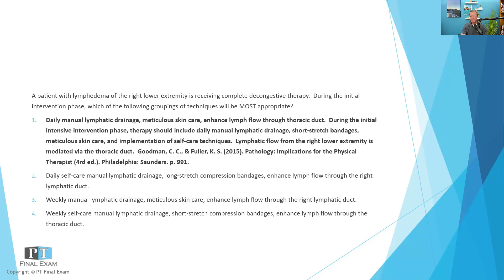The correct answer to this question is number one: daily manual lymphatic drainage, meticulous skincare, and enhanced lymph flow through the thoracic duct. As you recall, the watershed areas for the lymphatic system — the right and left lower extremities and the left upper extremity — are all combined into the thoracic duct. It's only the right upper extremity that goes into the right lymphatic duct. So think of it this way: three quarters of everything passes through the thoracic duct, with the exception of the right arm.